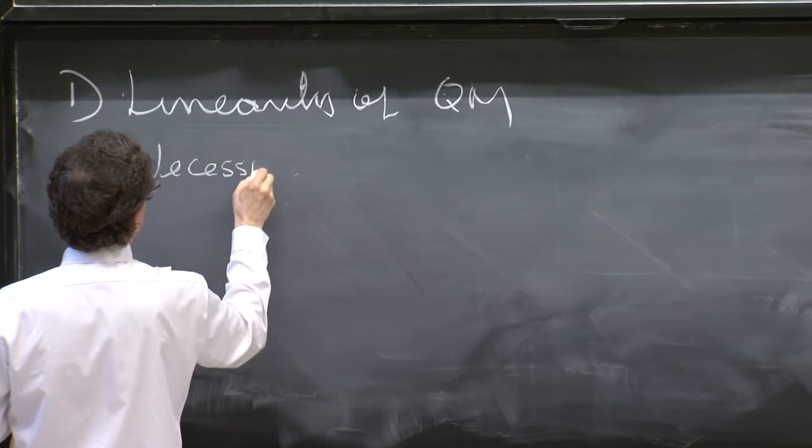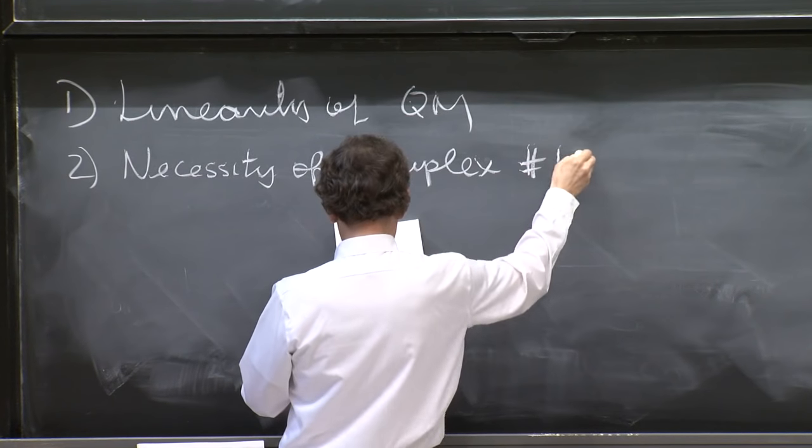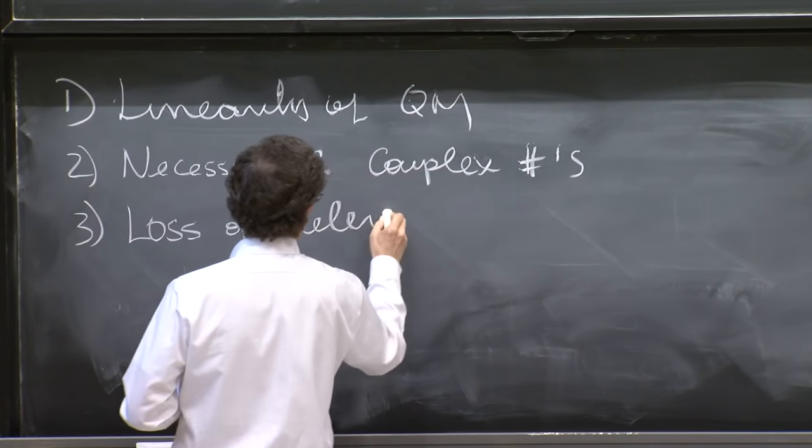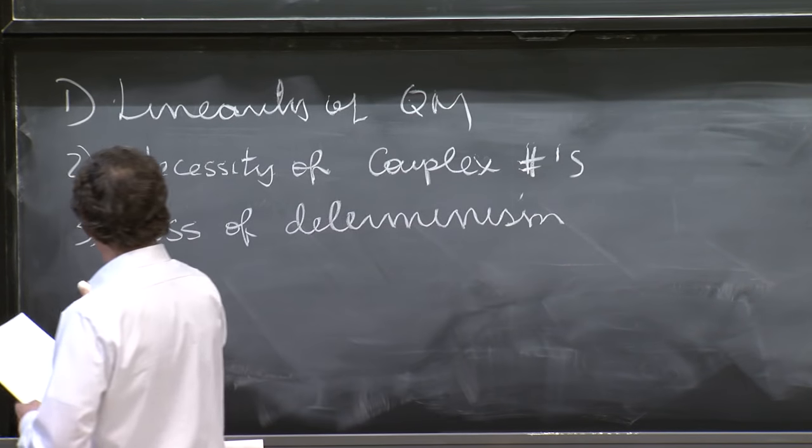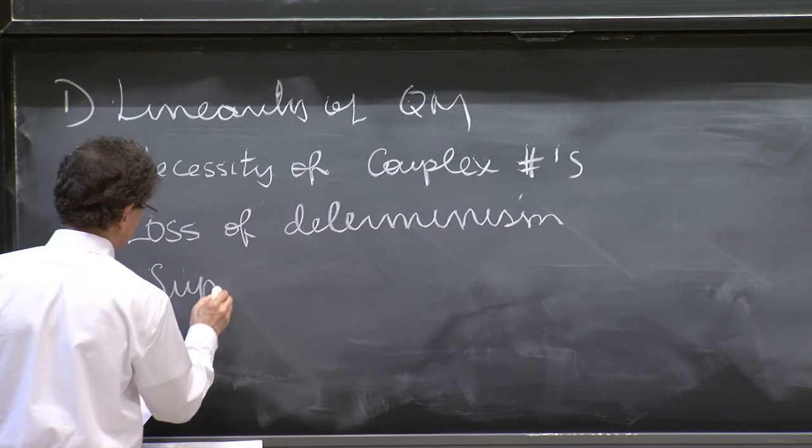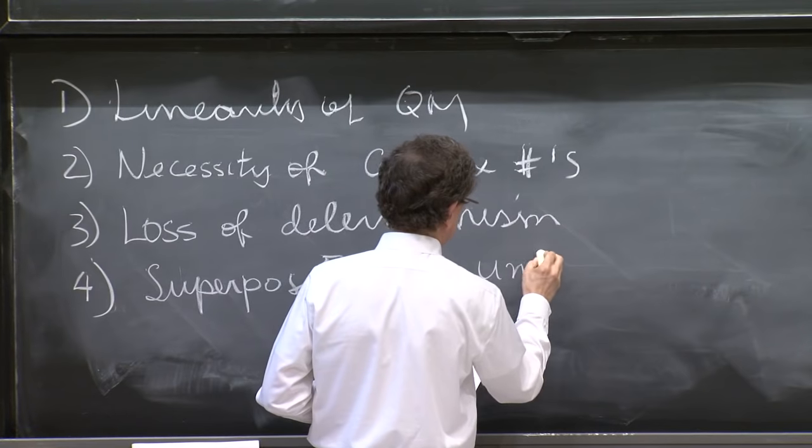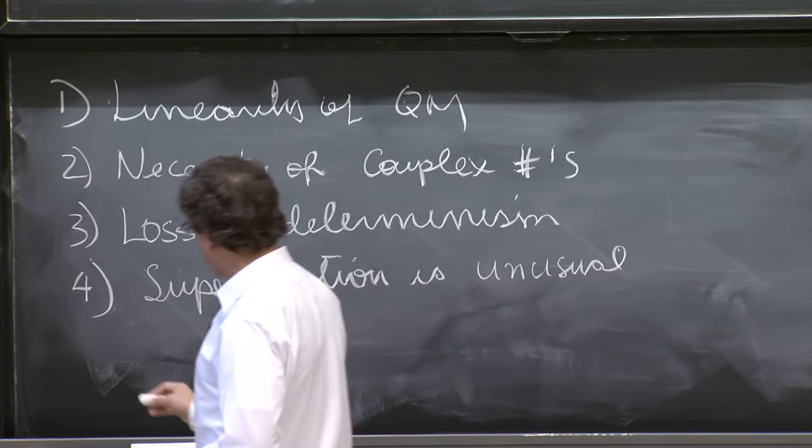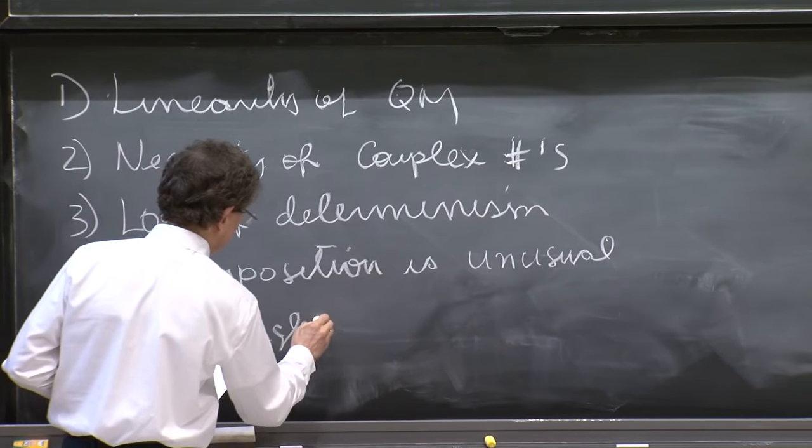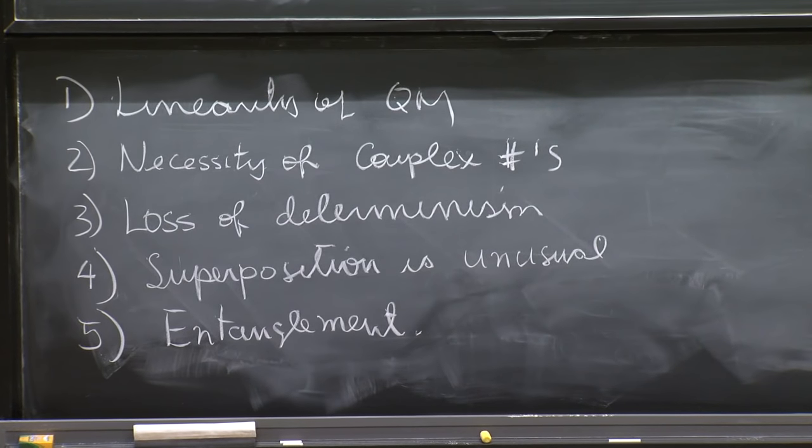Two: the necessity of complex numbers. Three: the loss of determinism. Four: the unusual features of superposition. And finally, what is entanglement? So that's what we aim to discuss today.